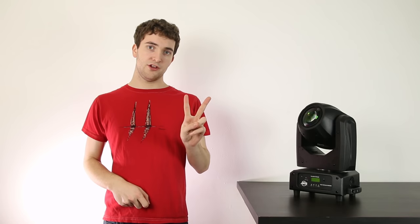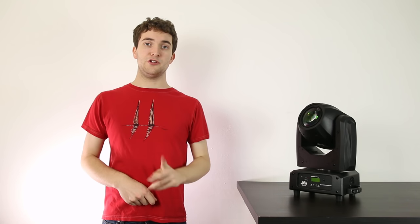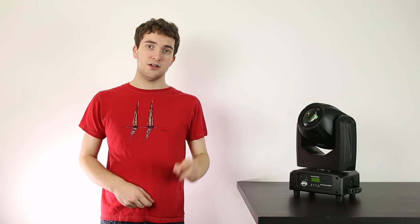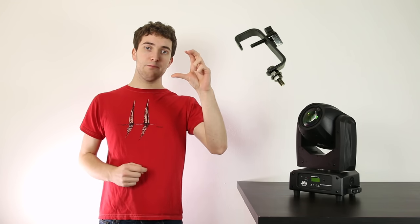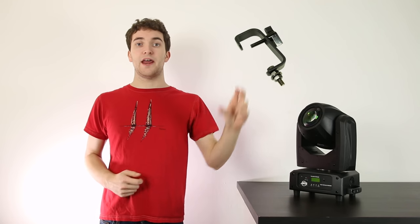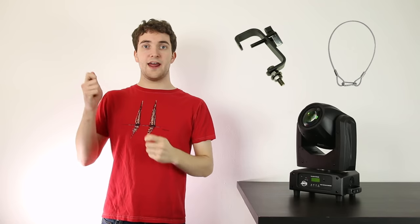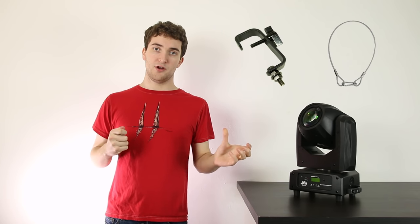The correct way to rig your lighting fixtures is with two points of contact, so if one point fails there is still another point to take the weight. In many cases this will be your clamp holding your lighting fixture and then a safety bond to secure it and add an extra point of contact if that clamp were to fail.